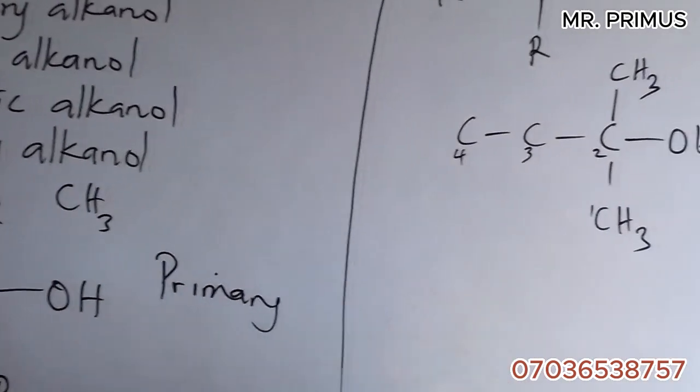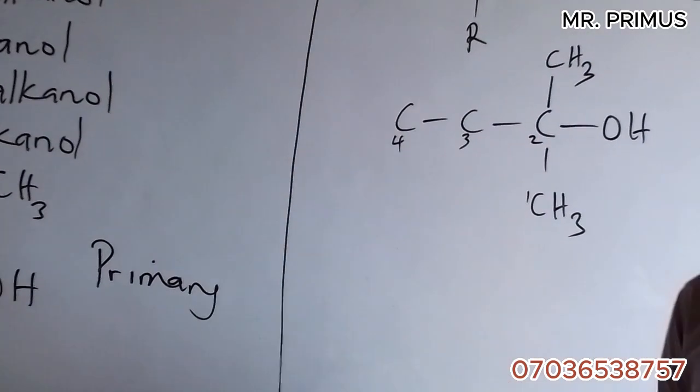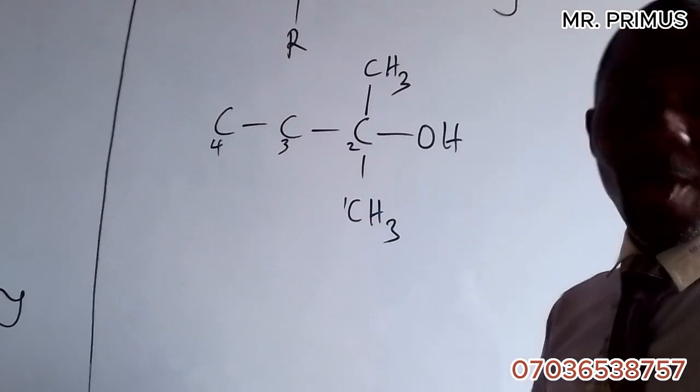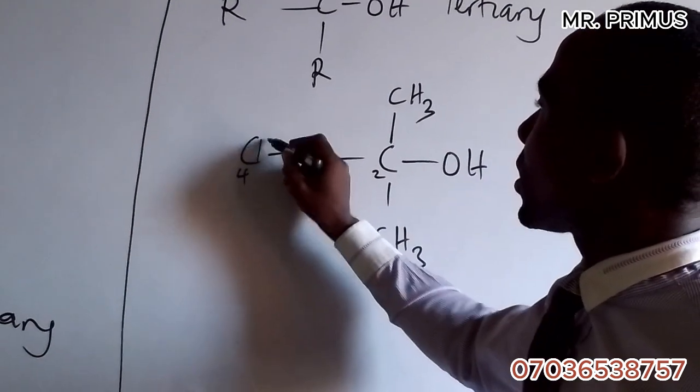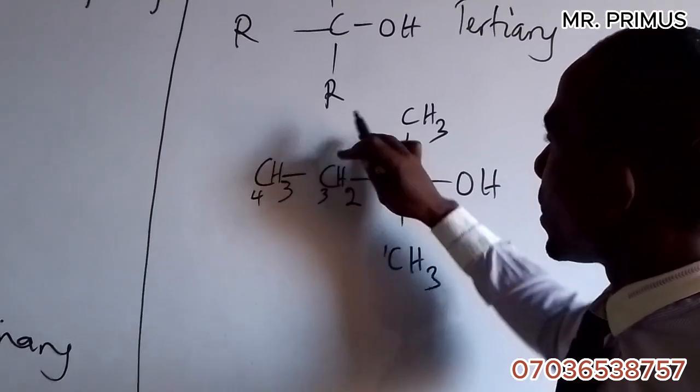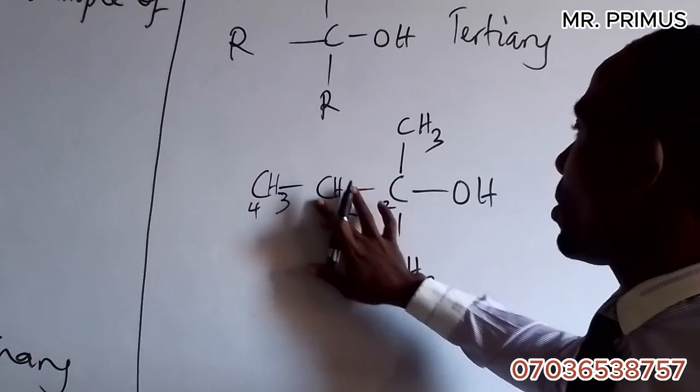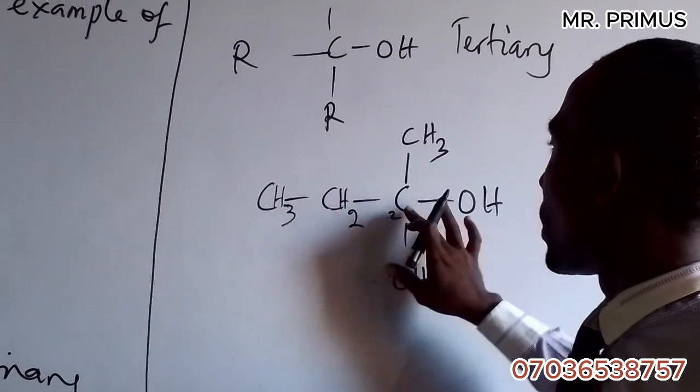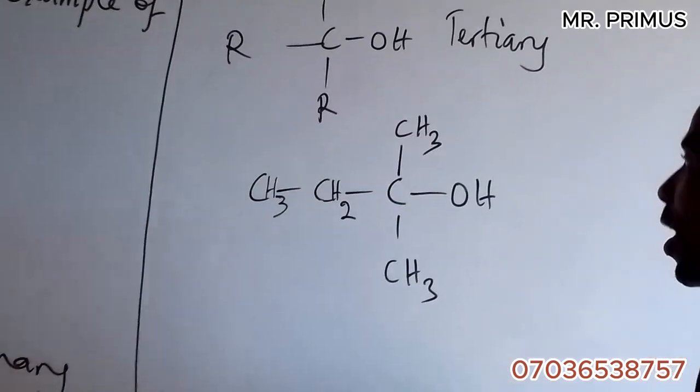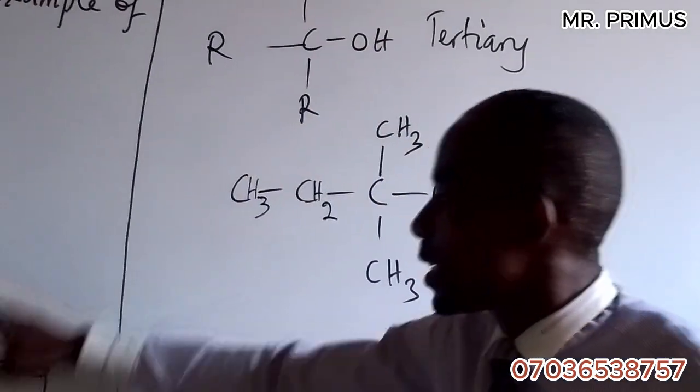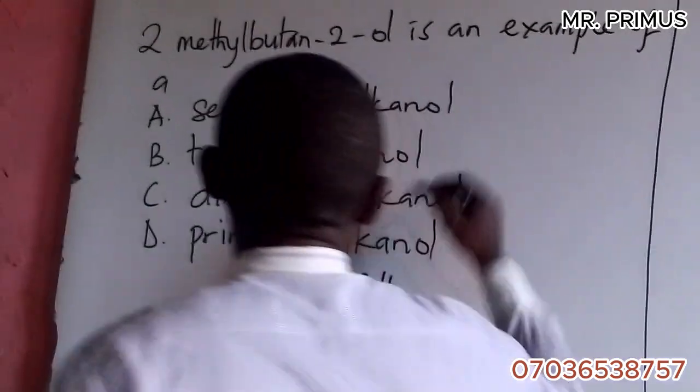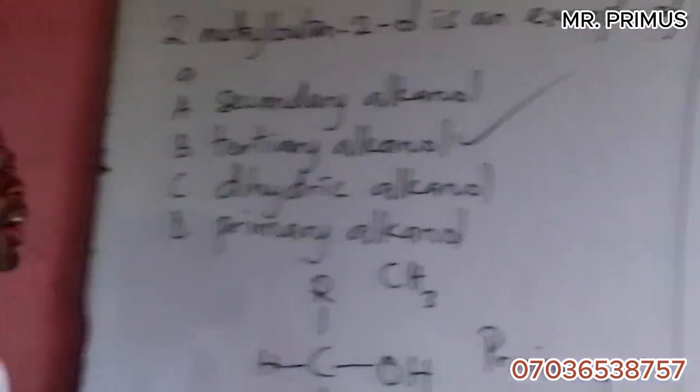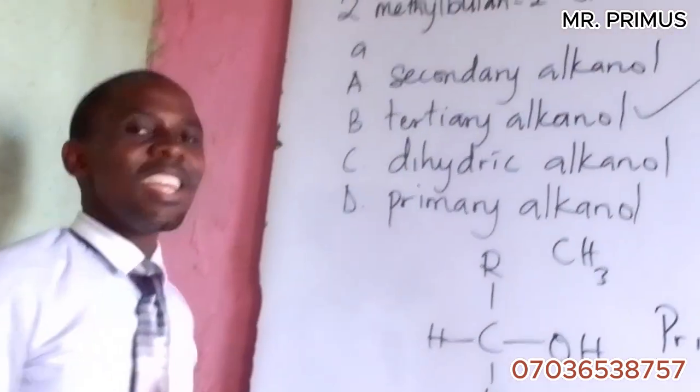I taught this in our previous video, so go check it. Now we can put this: CH3, CH2, and CH3. So which of these three structures has this kind of arrangement? This is tertiary. It's a tertiary alkanol. This is how to solve this question.